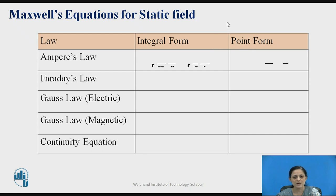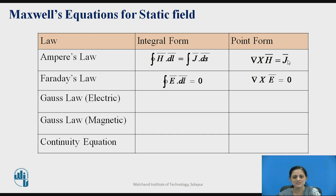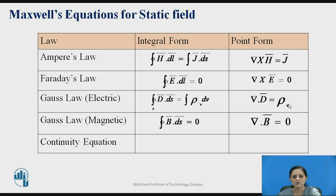Maxwell's equation from Ampere's law in integral form is: ∮H̄·dl̄ = ∫J̄·dS̄, whereas in point form it is: ∇×H̄ = J̄. Similarly, from Faraday's law we get another equation. Gauss's law for the electric field gives the Maxwell equation in integral and point form. Gauss's law for the magnetic field similarly defines the Maxwell equation, and the last equation is related to the continuity equation.